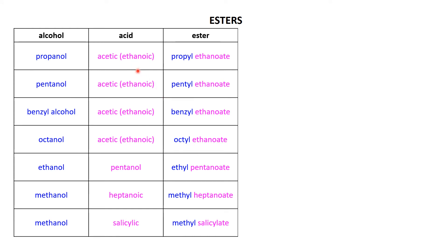So this is an experiment we do in the labs — and it might be one that I will try and put on as a movie, although I'm not quite sure how you virtually smell these things. You use acetic anhydride in many cases, because as we said the anhydride is a much better way to make the ester than using the acid.